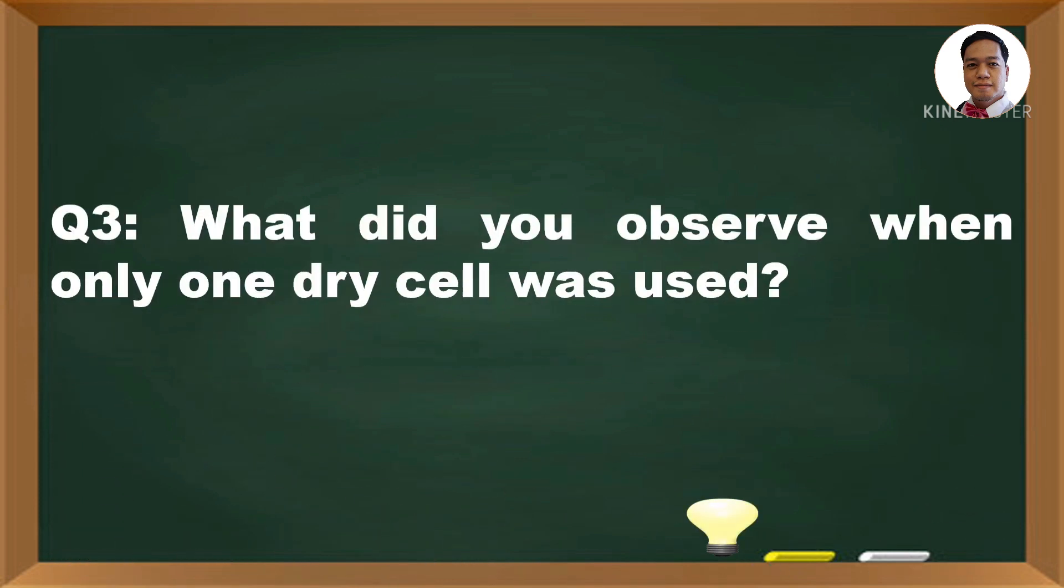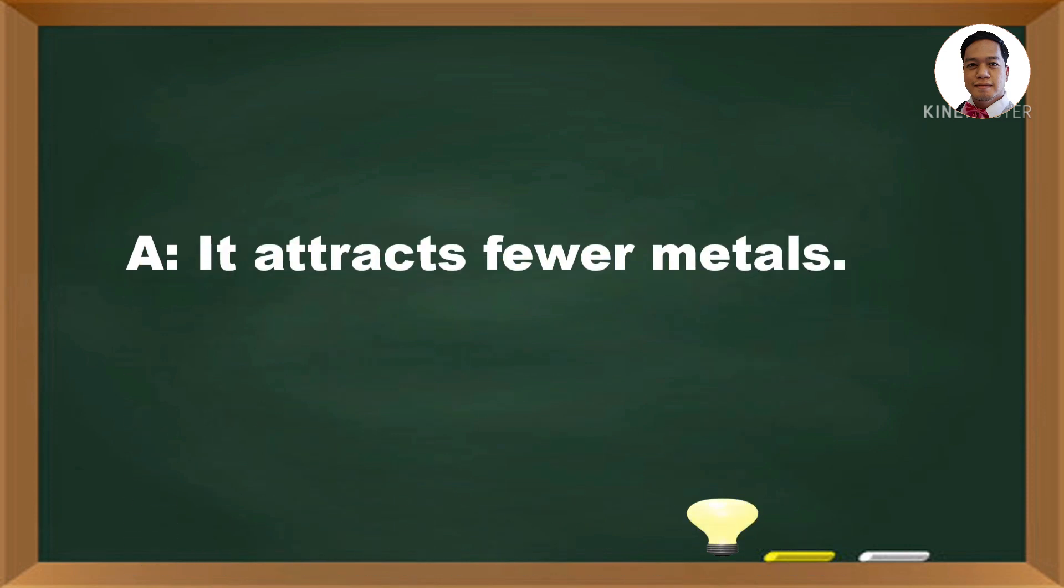What did you observe when one dry cell was used? The answer is, it attracts fewer metals.